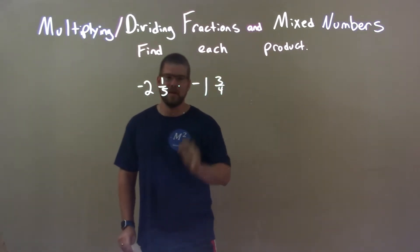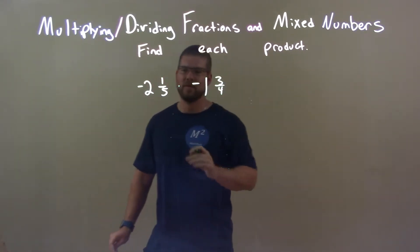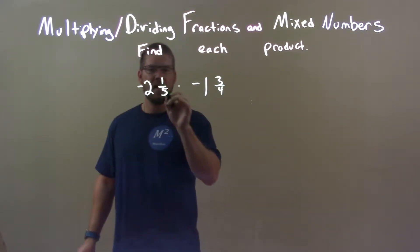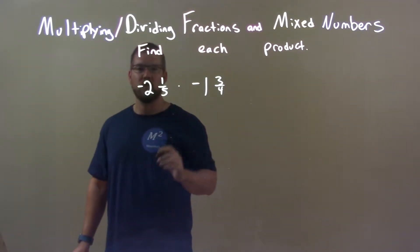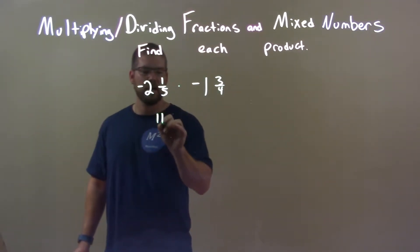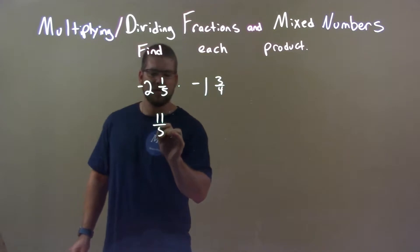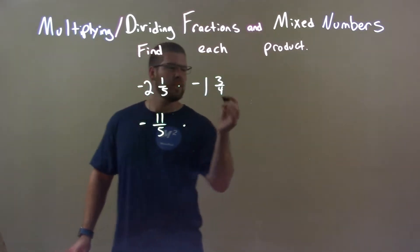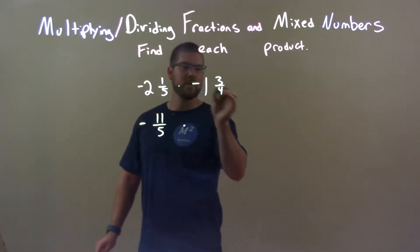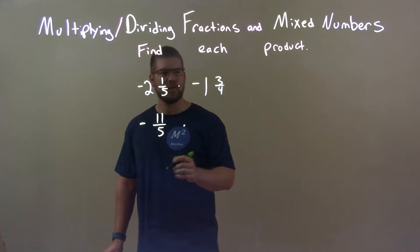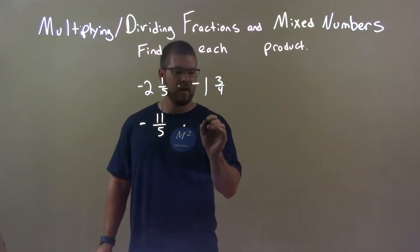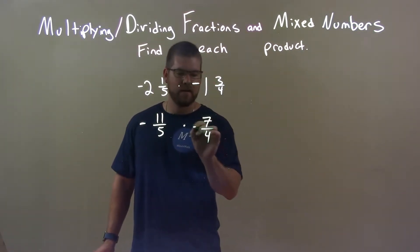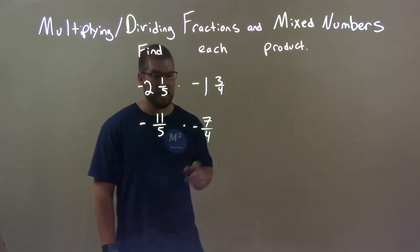I always convert these first into an improper fraction. So, 5 times 2 is 10, plus 1 is 11 — that gives us negative 11 fifths. Then, 4 times 1 is 4, plus 3 is 7 — so we have negative 7 over 4. Don't forget the negatives.